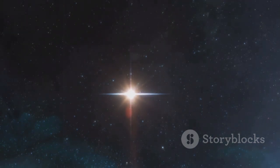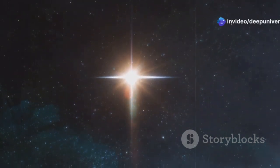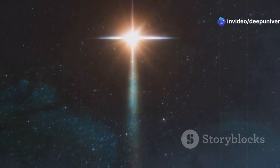Light from the nearest star system, Alpha Centauri, takes over 4 years to reach Earth. This means we see Alpha Centauri as it was 4 years ago.